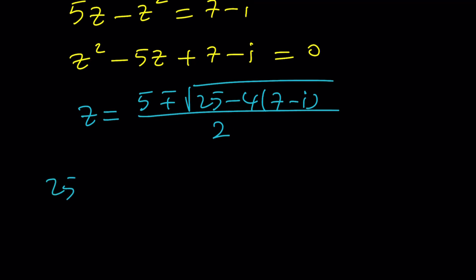Now, let's go ahead and simplify the expression inside the radical. 25 minus 28 plus 4I. That'll be negative 3 plus 4I. So here's what we're supposed to do. We're supposed to square root this. The question is, the million dollar question is, how do you square root a complex number?